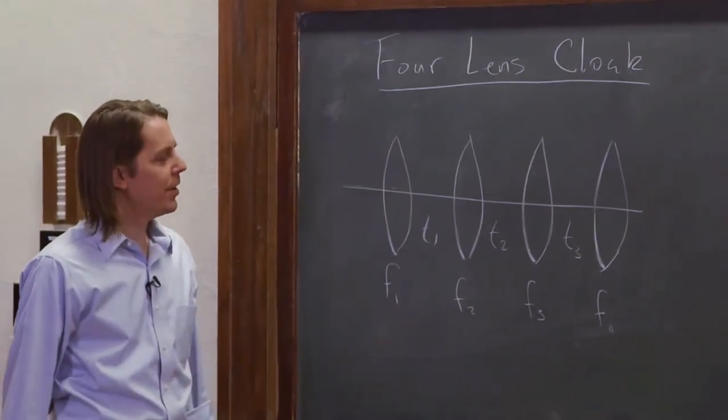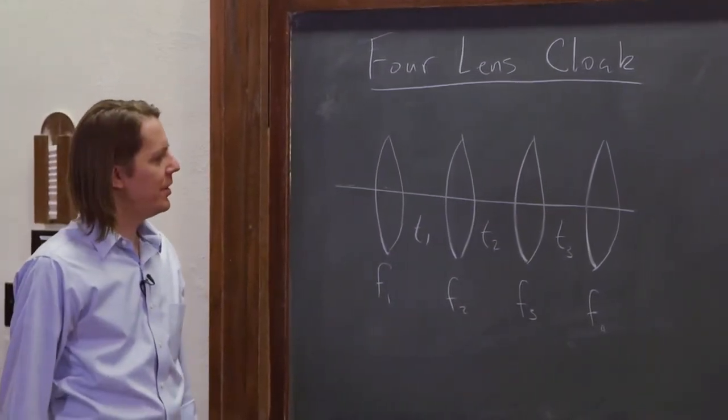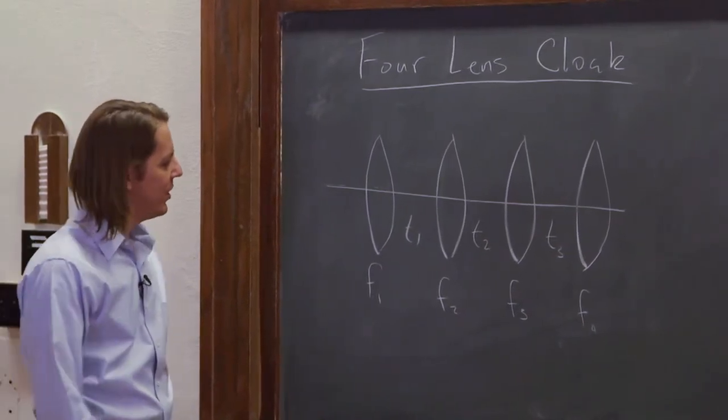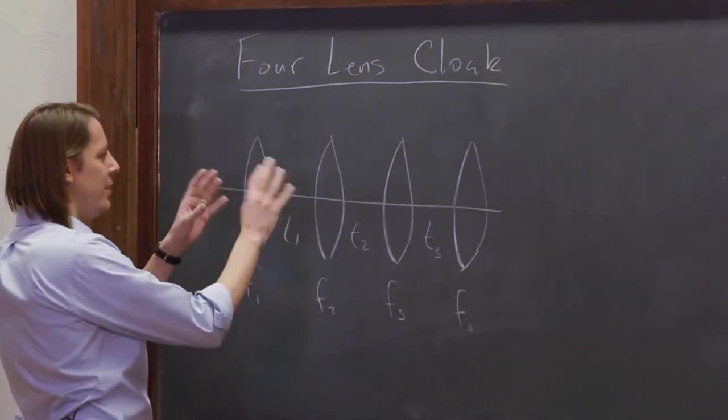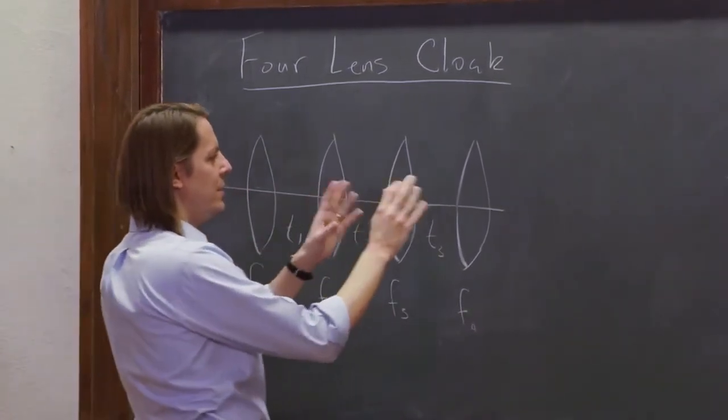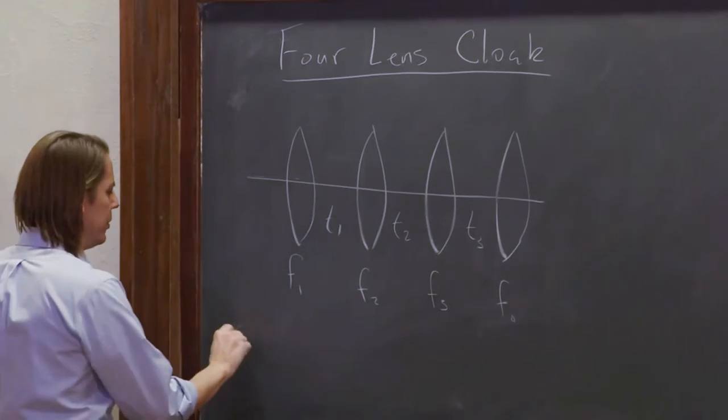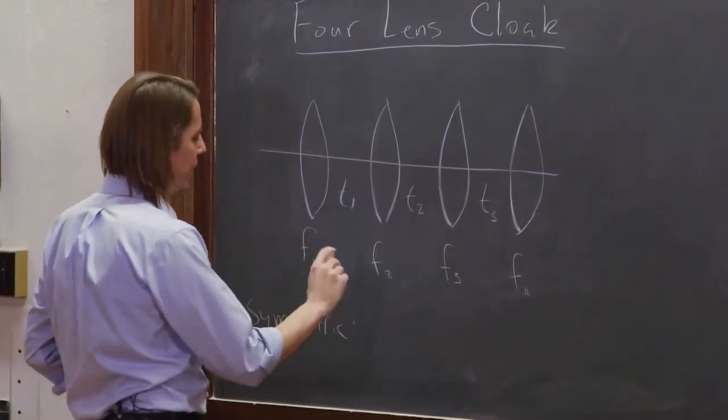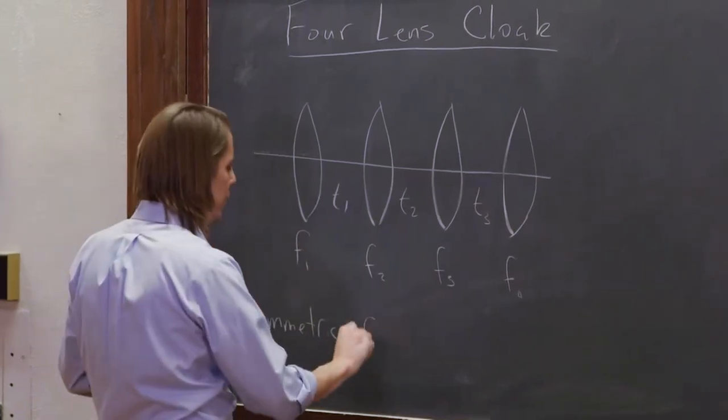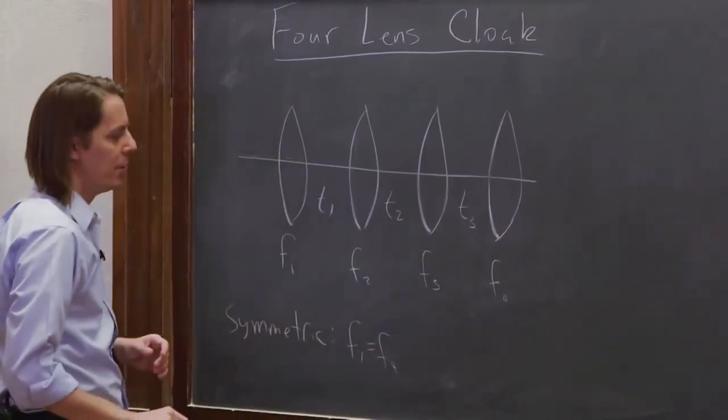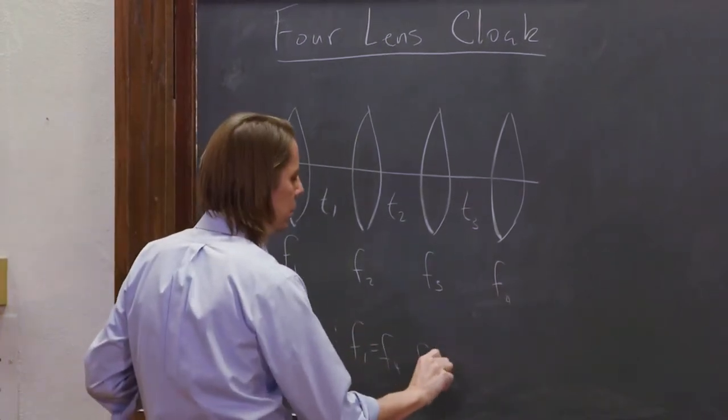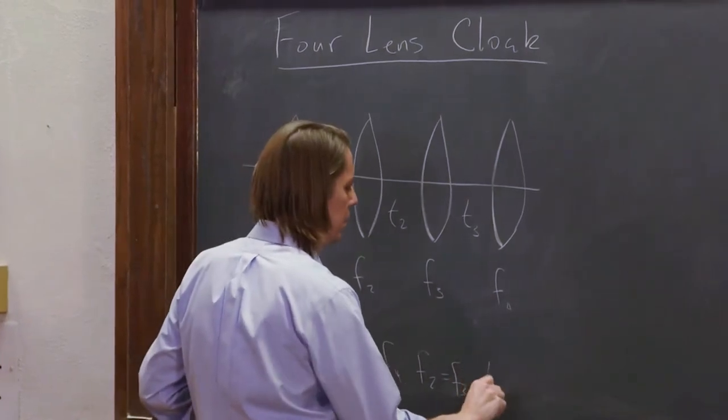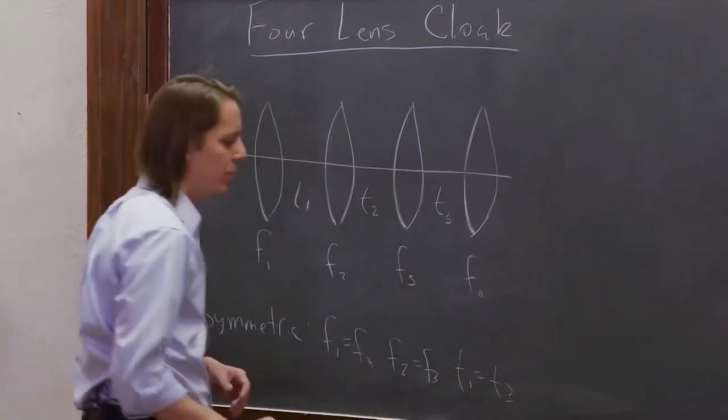And we could go from there, get pretty messy, so we're going to apply a little bit of intuition and simplify a little bit and say it should be symmetric. Anything these two lenses do, these two will undo. So let's make it symmetric at least to simplify. So symmetric would mean that F1 equals F4, and F2 equals F3, and T1 equals T3.